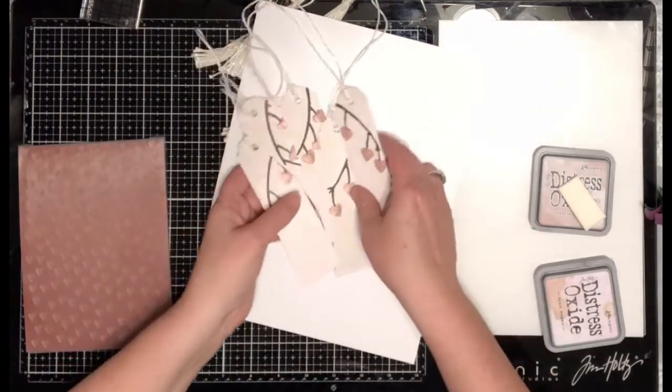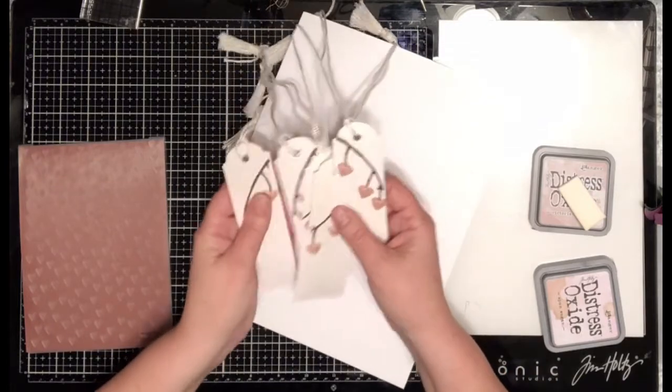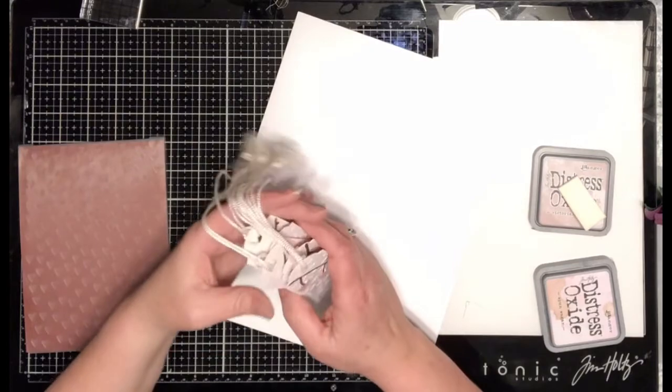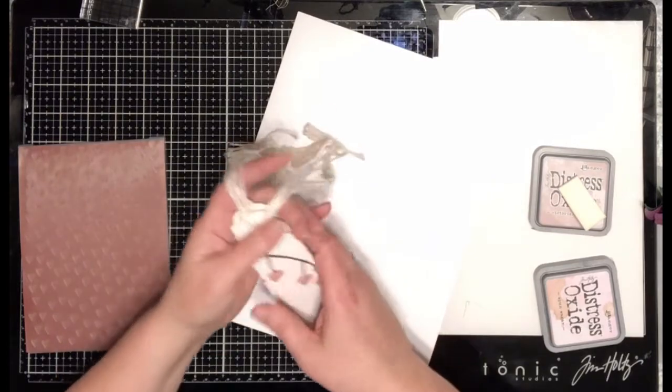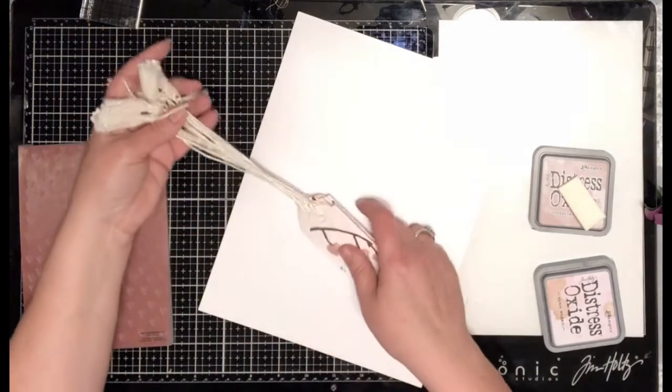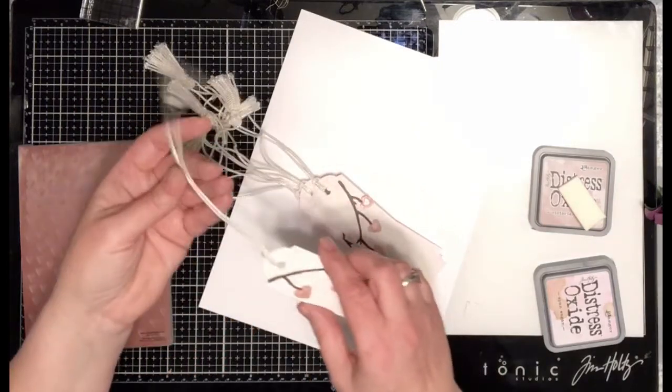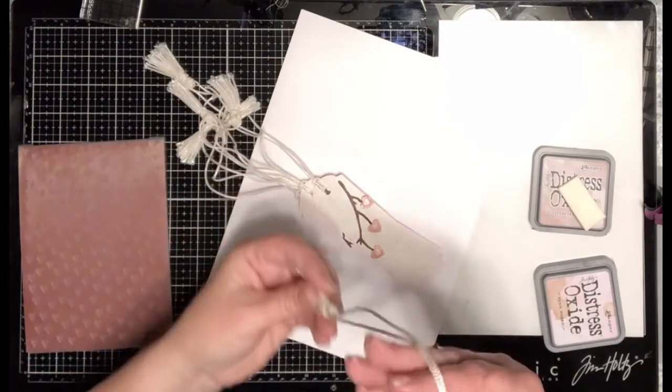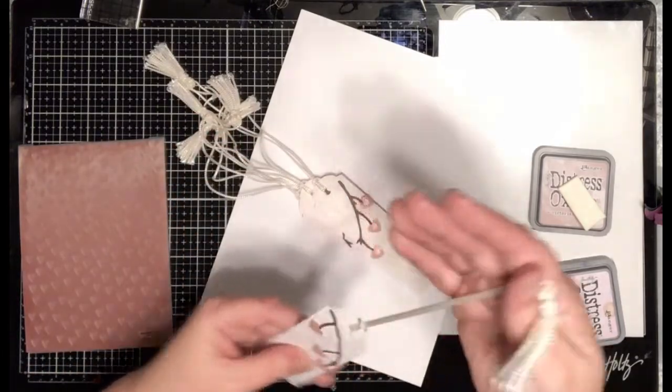Now looking at the pictures of the bleeding heart flowers, they just don't have a lot of leaves on their branches and so that bugs me because I want to throw some leaves on there. But I'm gonna leave it alone. I have this beautiful cording that I've made a tassel at the end and so that can hang nicely in your book as well.